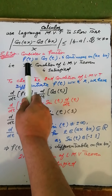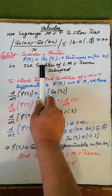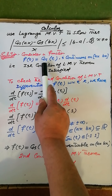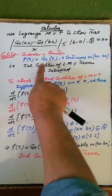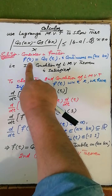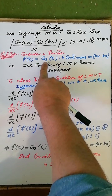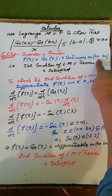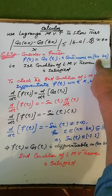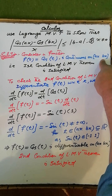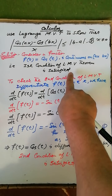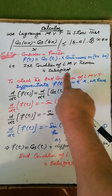Consider the function f(t) = cos(t). This function is a trigonometric function, and trigonometric functions are continuous everywhere. Therefore, f(t) = cos(t) is also continuous on the closed interval whose endpoints are ax and bx, which is a subset of the real numbers. Therefore, the first condition of the Lagrange Mean Value theorem is satisfied.